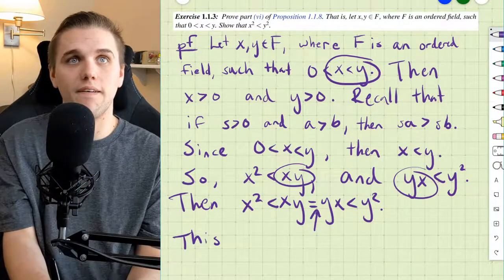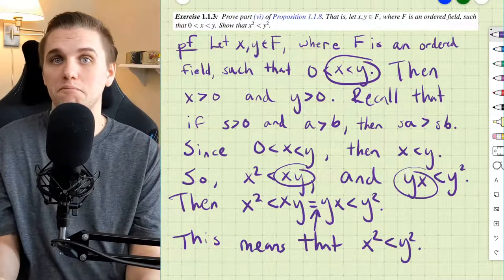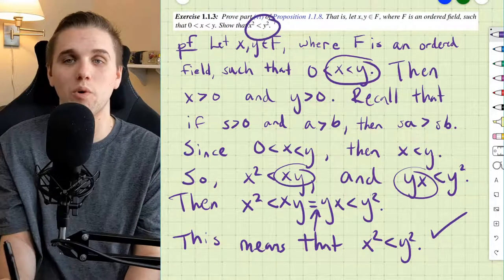So, this means that x squared is less than y squared. And that's the end of our proof. We show that x squared is less than y squared. That's what we were wanting to show.